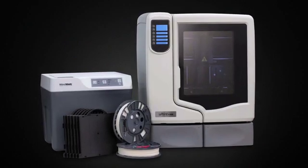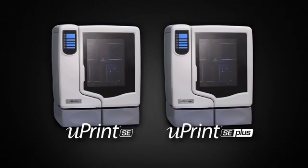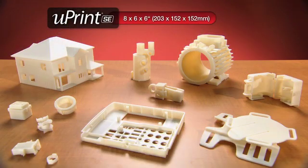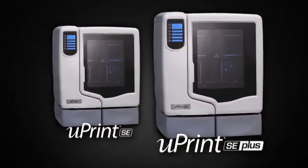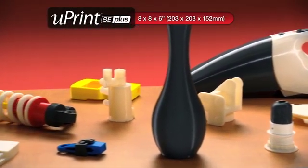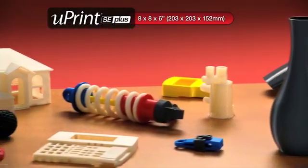There are no hidden costs and nothing extra to buy. And you have a choice of two models. The U-Print SE for ivory models up to 8 x 6 x 6 inches. Or the U-Print SE Plus with a larger build envelope, faster print speed, and your choice of 9 modeling colors.